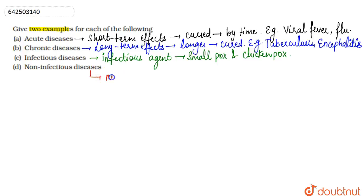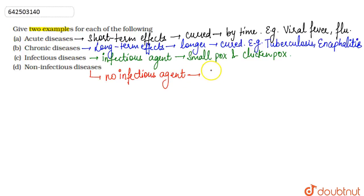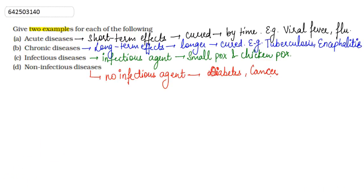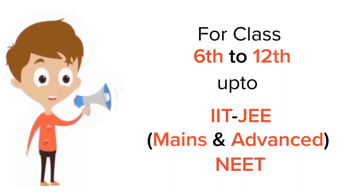Non-infectious diseases are those diseases which do not require any infectious agent — their cause does not involve any infectious agent. Examples are diabetes and cancer. These are the two examples of each type of disease.